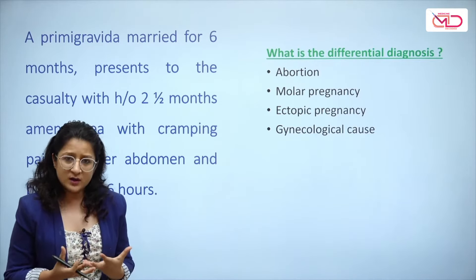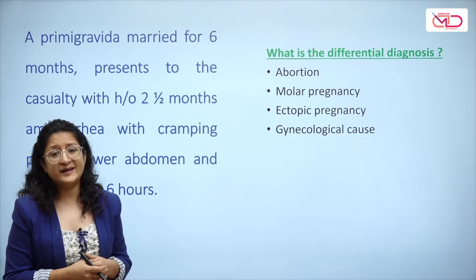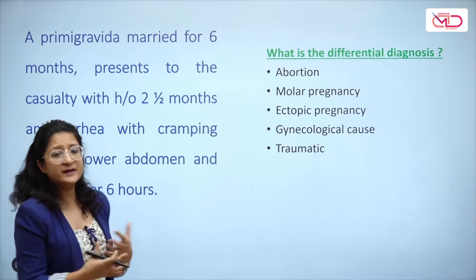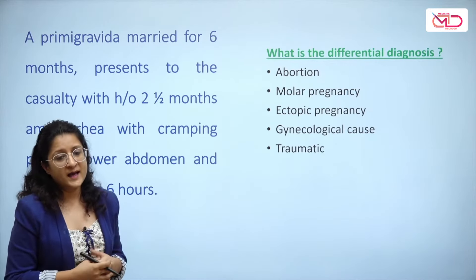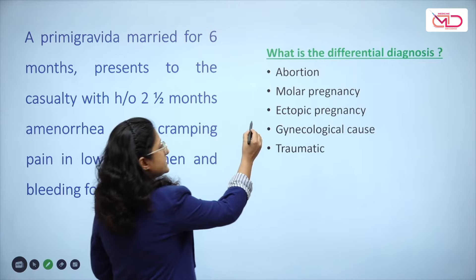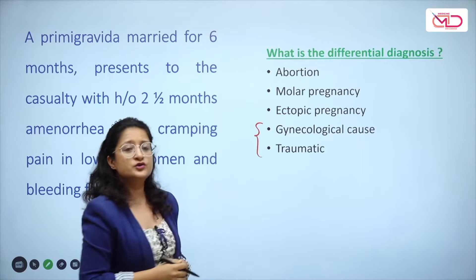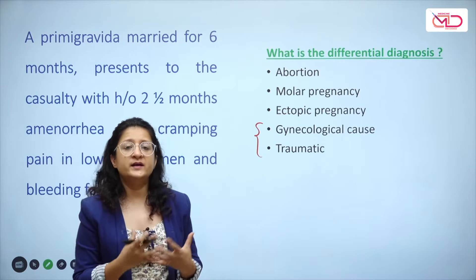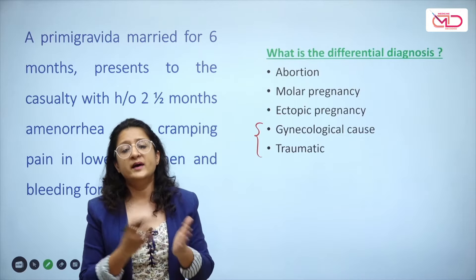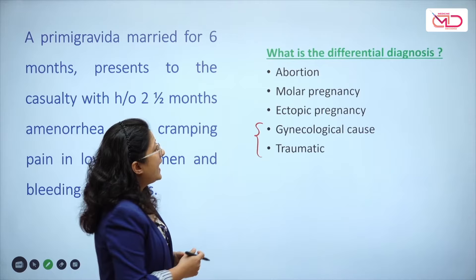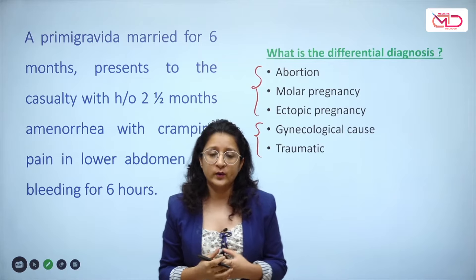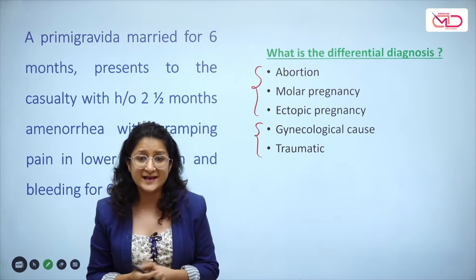It could also be a coincidental gynecological cause — she could be pregnant with a gynecological cause of bleeding, or not pregnant at all. Similarly, it could be a coincidental traumatic cause. These two causes can be eliminated by taking a careful history: any trauma, prior similar complaints, prior menstrual cycle patterns. For the top three differential diagnoses, check for pregnancy using a urine pregnancy test or serum beta-hCG.